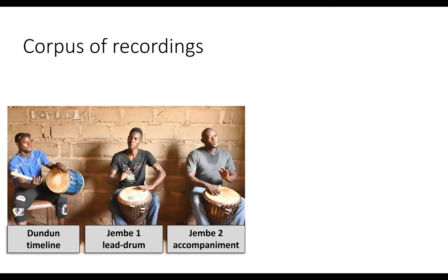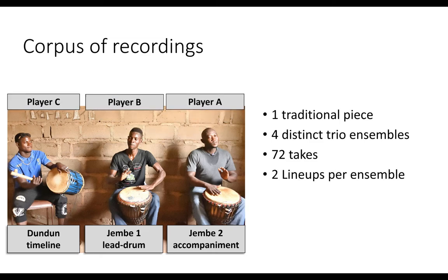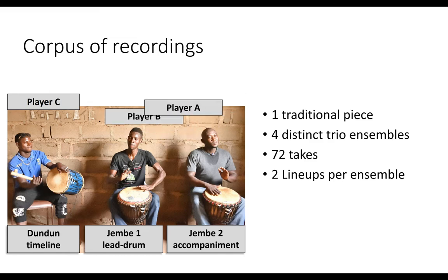The corpus of recordings we collected concerns one traditional piece of repertoire only, performed by four distinct trio ensembles in 72 different takes, which means that each ensemble performed 16 to 20 separate takes of the same piece of music. We had two lineups per ensemble, which means that after each take, the two djembe players in the ensemble switched roles between accompaniment and lead part.